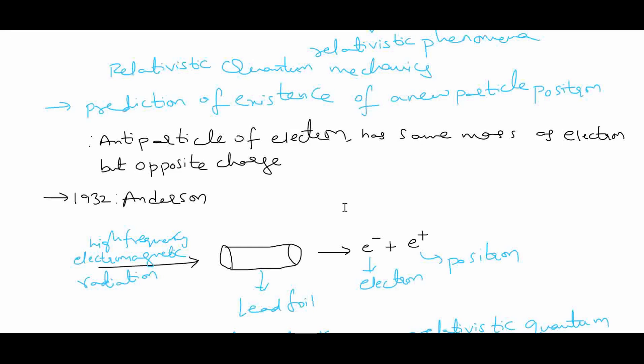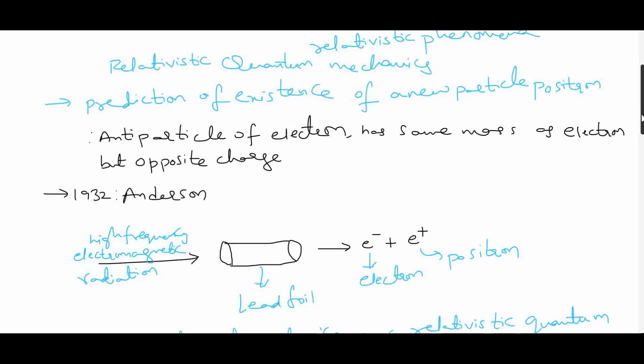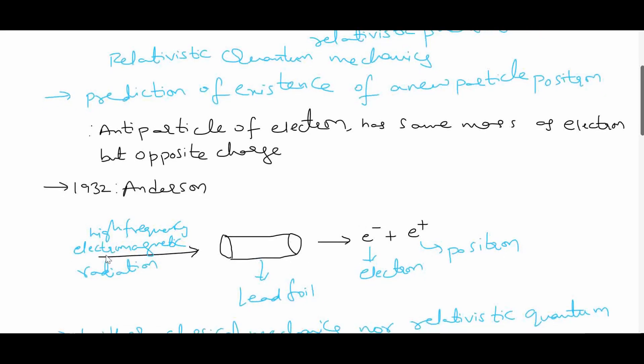When high frequency electromagnetic radiations are passed through lead foil, then individual photons of the radiation disappear and produce electron and positron pairs. The experiment is conducted by sending high frequency electromagnetic radiation into lead foil. This results in electron and positron production. Here, energy is being converted into matter because electrons are matter and photons are massless particles, which are energy packets or quanta.